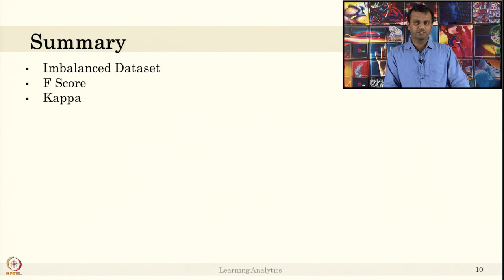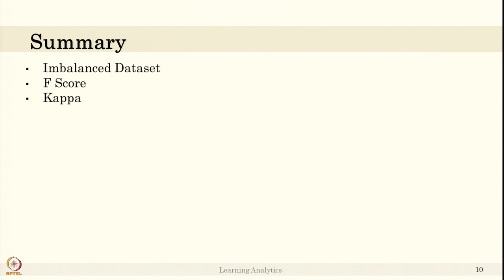In this video, we saw what is imbalanced data set, that is in a data set there are too many positive cases or too many negative cases. In order to pick up the better performance or better performed classifier, we have to come up with a new score which combines accuracy, precision, and recall. One can be F-score, simple one to start with, or the Cohen's kappa. Cohen's kappa is used widely to pick the right classifier.